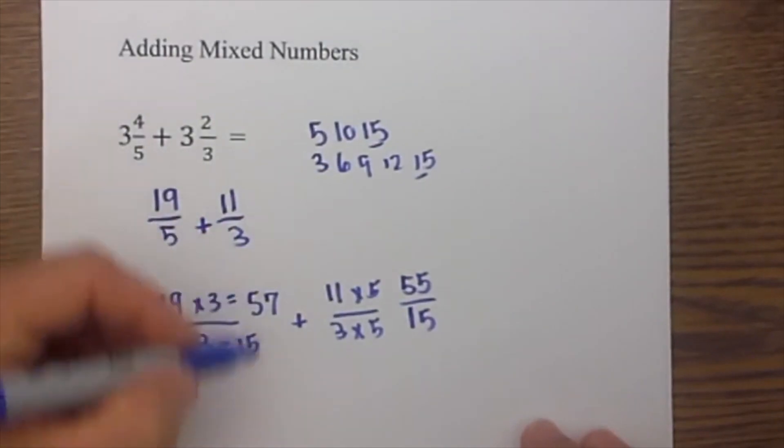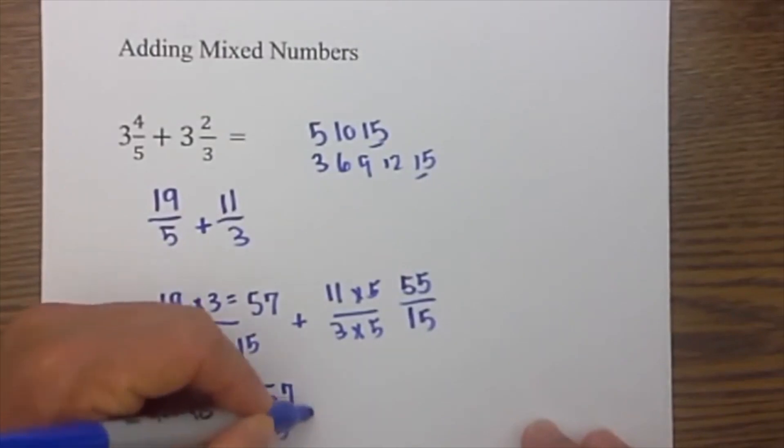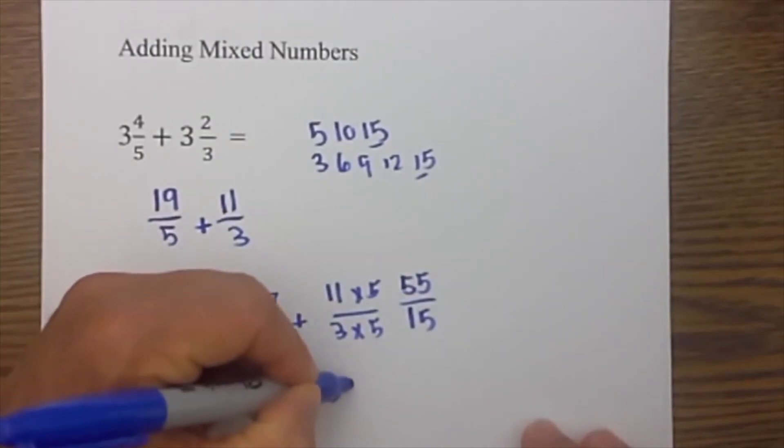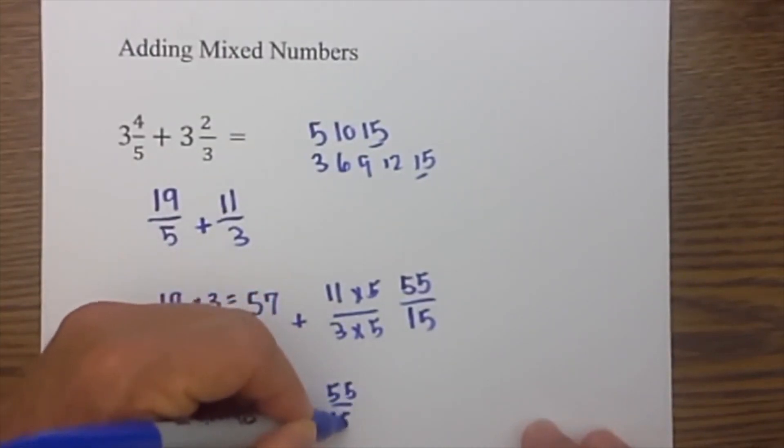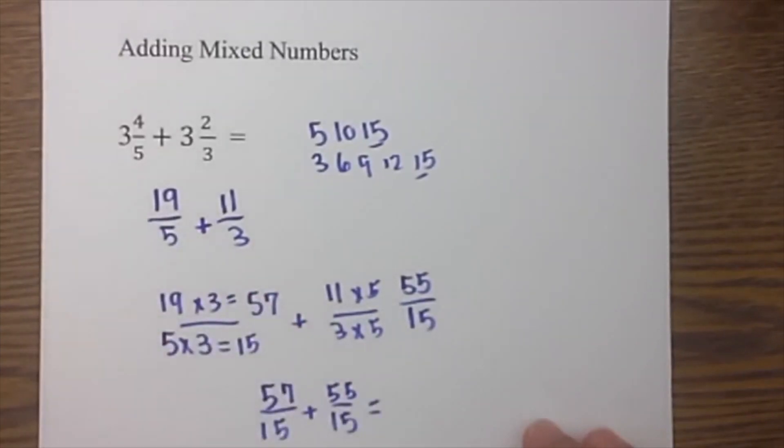So let's rewrite this. After converting it, we have 57 over 15 plus 55 over 15. I add those two together.